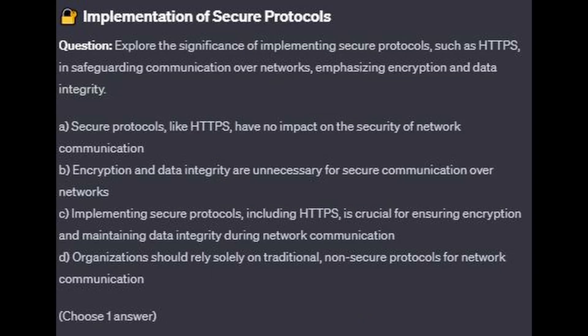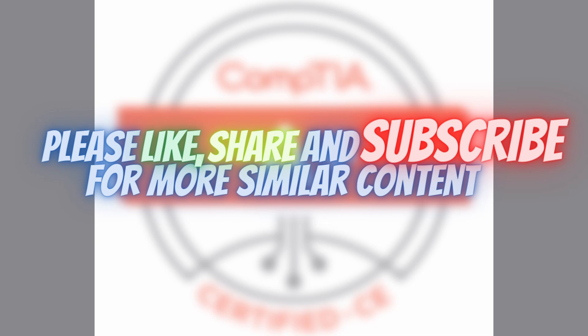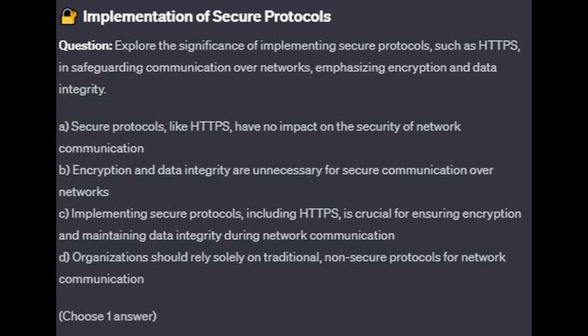Question 10: Explore the significance of implementing secure protocols such as HTTPS in safeguarding communications over a network, emphasizing encryption and data integrity. Is it A: secure protocols like HTTPS have no impact on the security of network communication? Is it B: encryption and data integrity are unnecessary for secure communication over networks? Is it C: implementing secure protocols including HTTPS is crucial for ensuring encryption and maintaining data integrity during network communication? Or is it D: organizations should rely solely on traditional non-secure protocols for network communication?